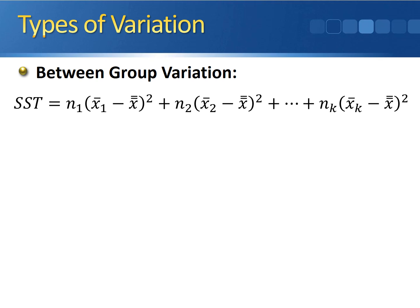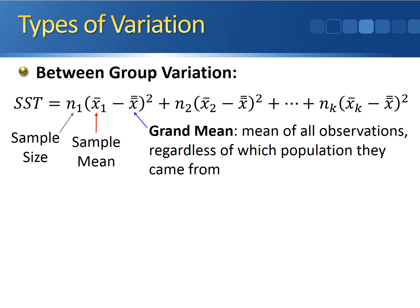The between-group variation is denoted SST — sums of squares due to the treatment — and is calculated as follows. For each group, we take the sample size and multiply it by the squared difference between the sample mean for that group and the grand mean, X-double-bar. The grand mean is the mean of all observations regardless of the population they came from — we sum every observation ignoring the group and divide by the total number of observations. We repeat this for each population and add all terms together. Keep in mind the between-group variation measures how different the sample means are.